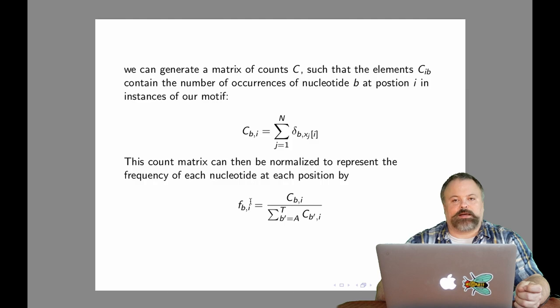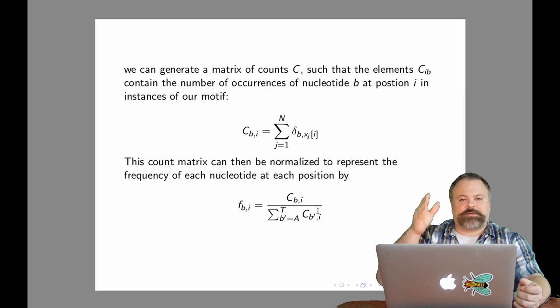We can then normalize our count matrix to get a probability matrix or frequency matrix, F sub bi, that I mentioned previously. In this case, all I'm doing is summing the terms in each column of the count matrix and then dividing each term by the sum of its corresponding column.